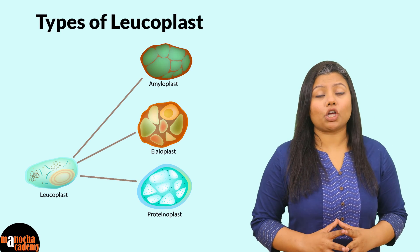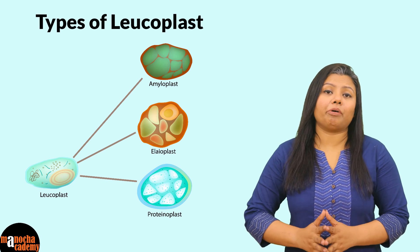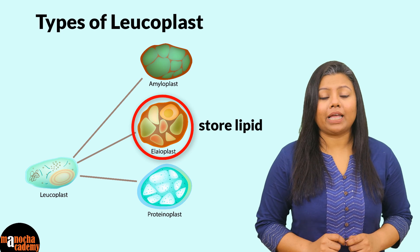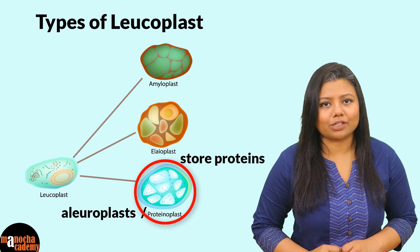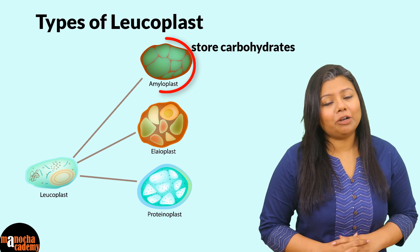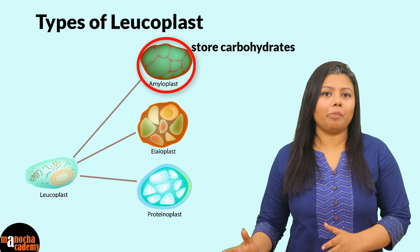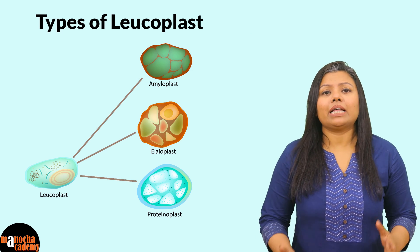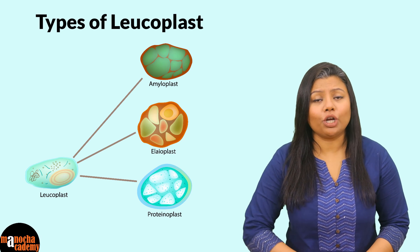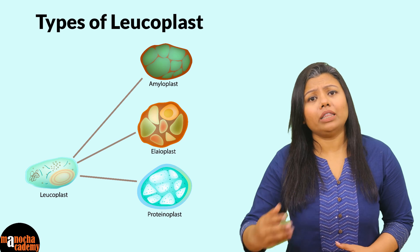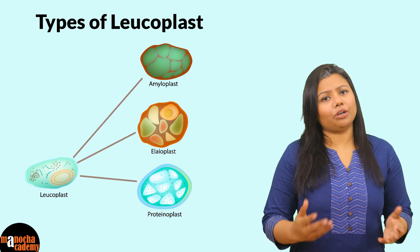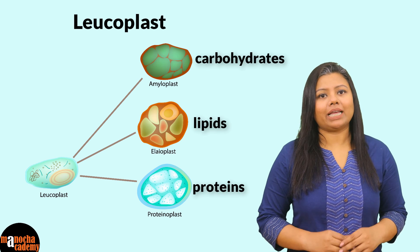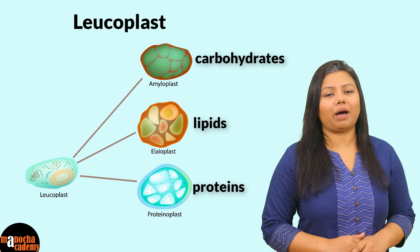There are three types of leukoplasts on the basis of what type of food they store. Elaioplasts are those leukoplasts that store lipid. Aleuroplasts or proteoplasts store proteins, and amyloplasts are leukoplasts that store carbohydrates mostly in the form of starch. Sometimes these leukoplasts have been shown to evolve or change into other types of plastids, for example chloroplasts or chromoplasts. But the main function of leukoplasts is still to store food in different parts of the plant body.